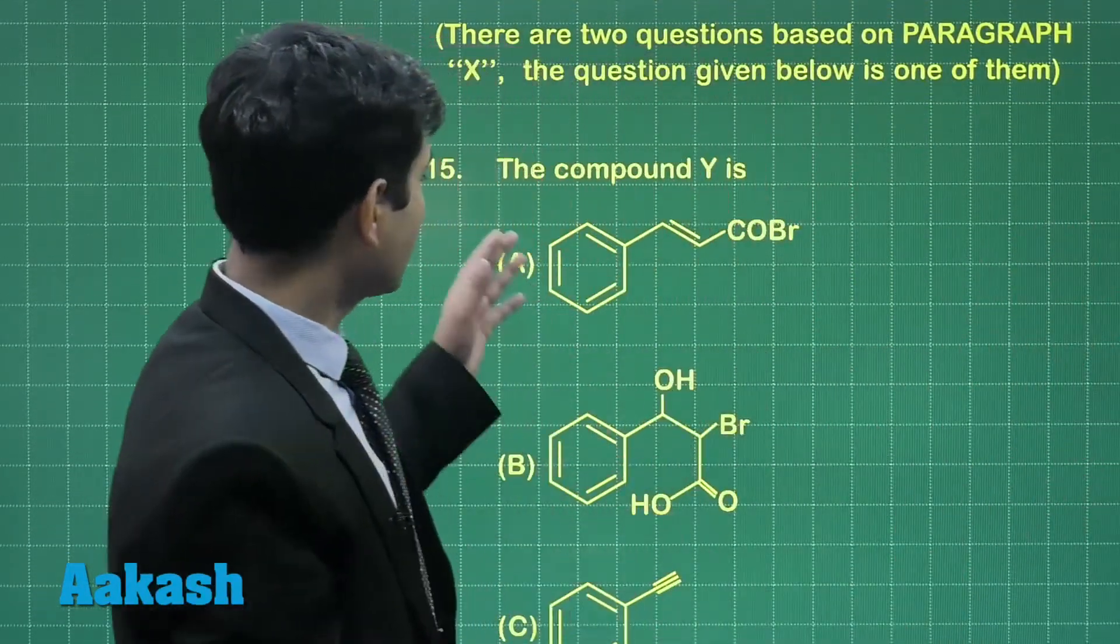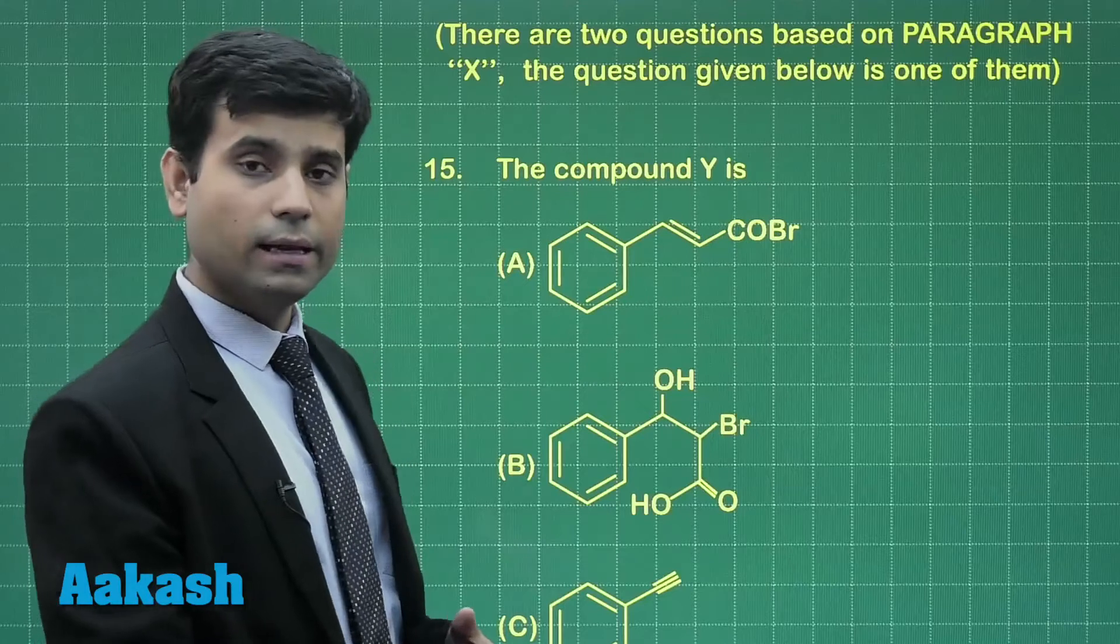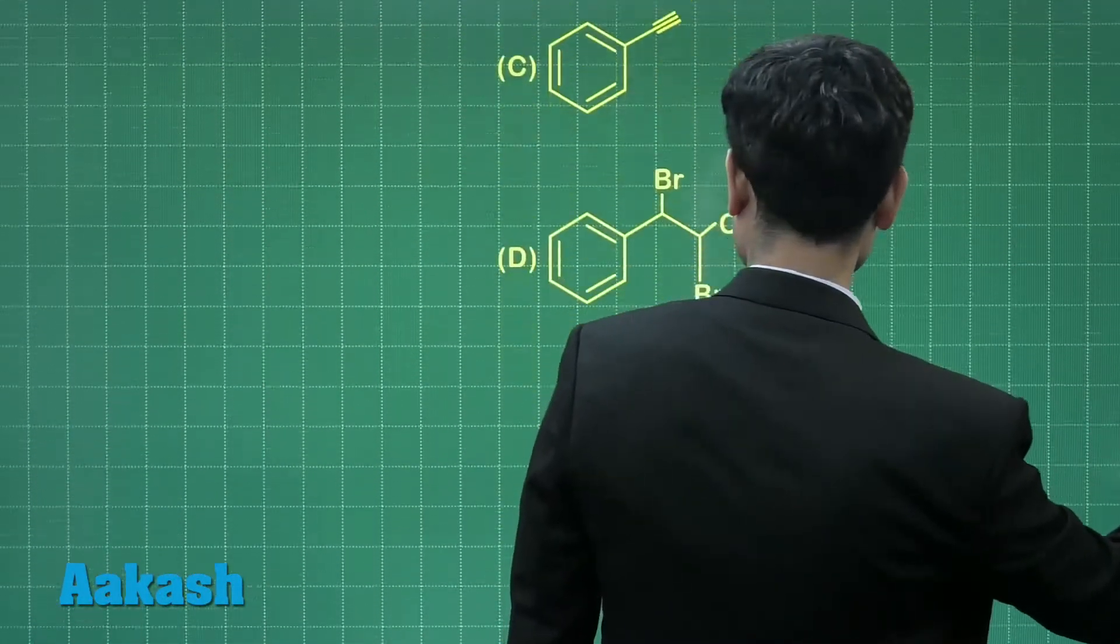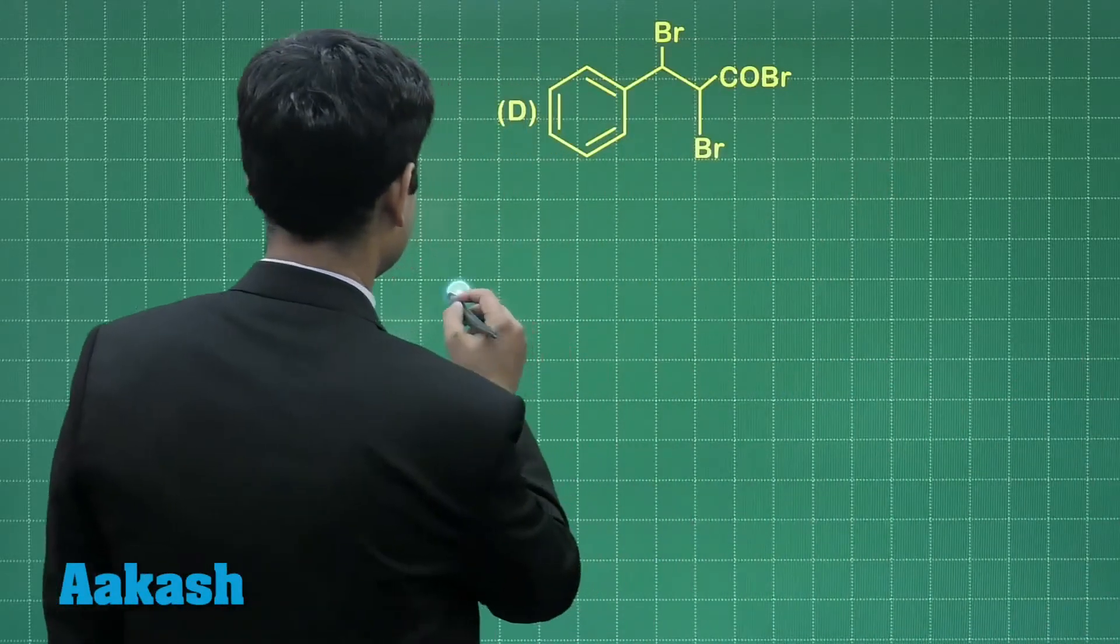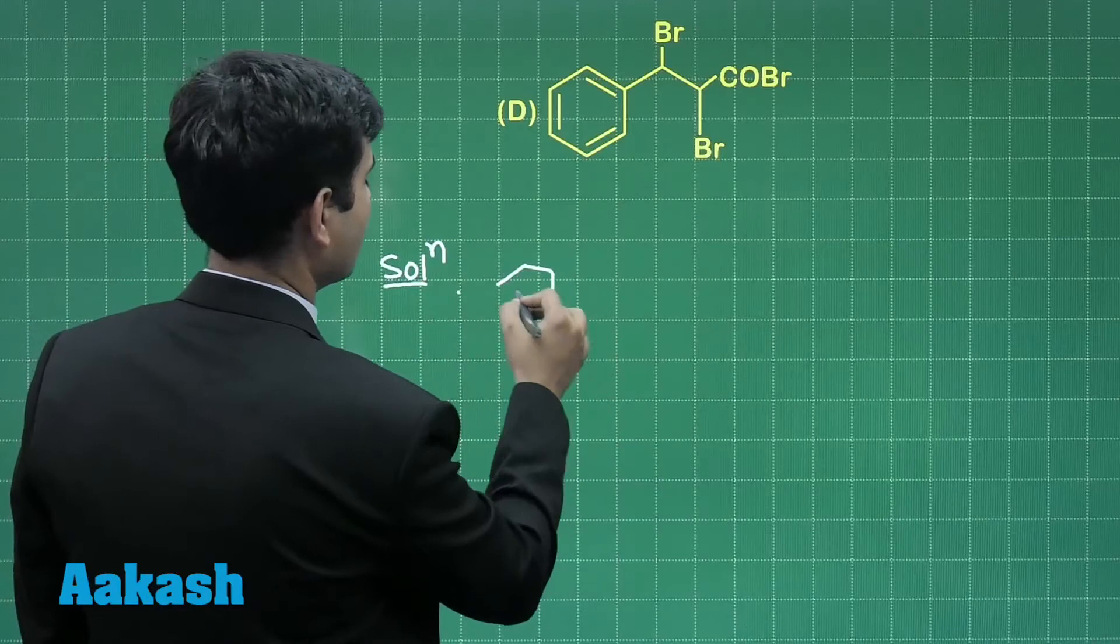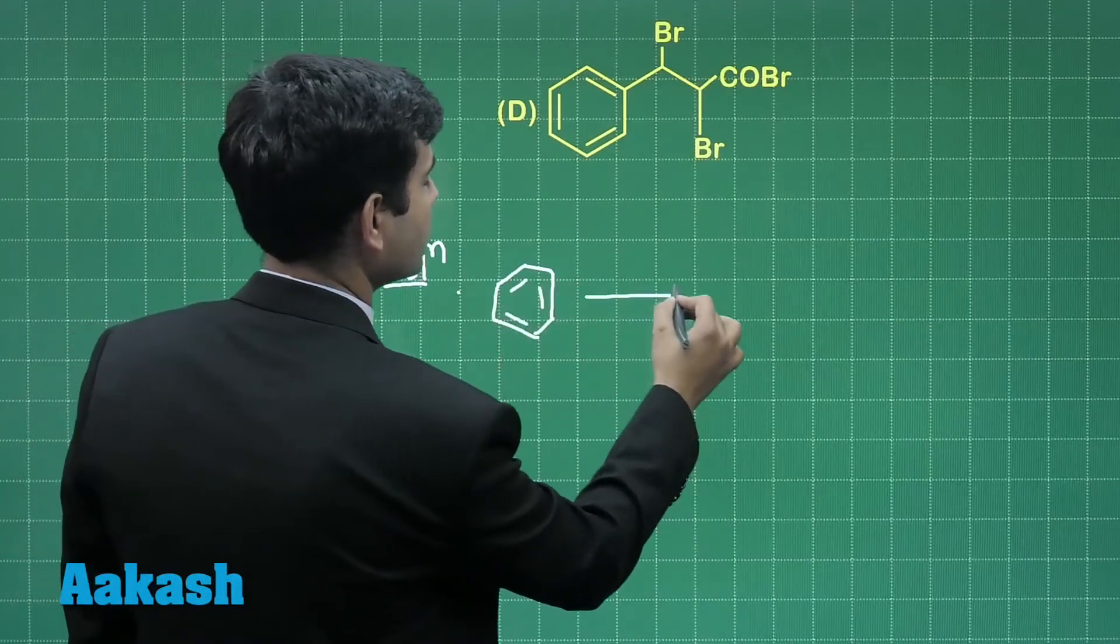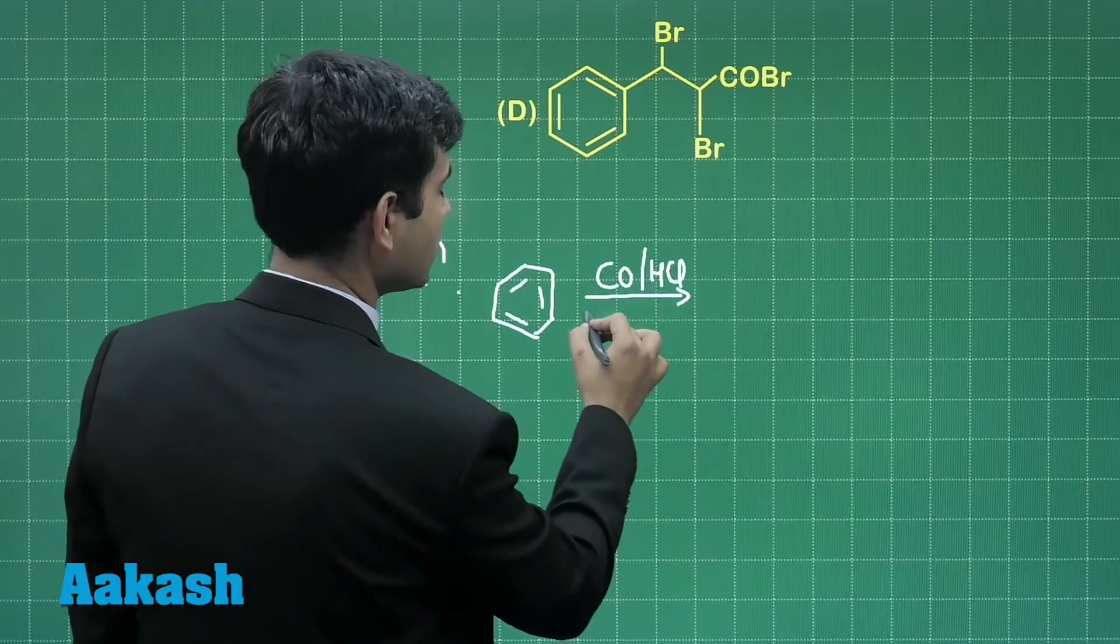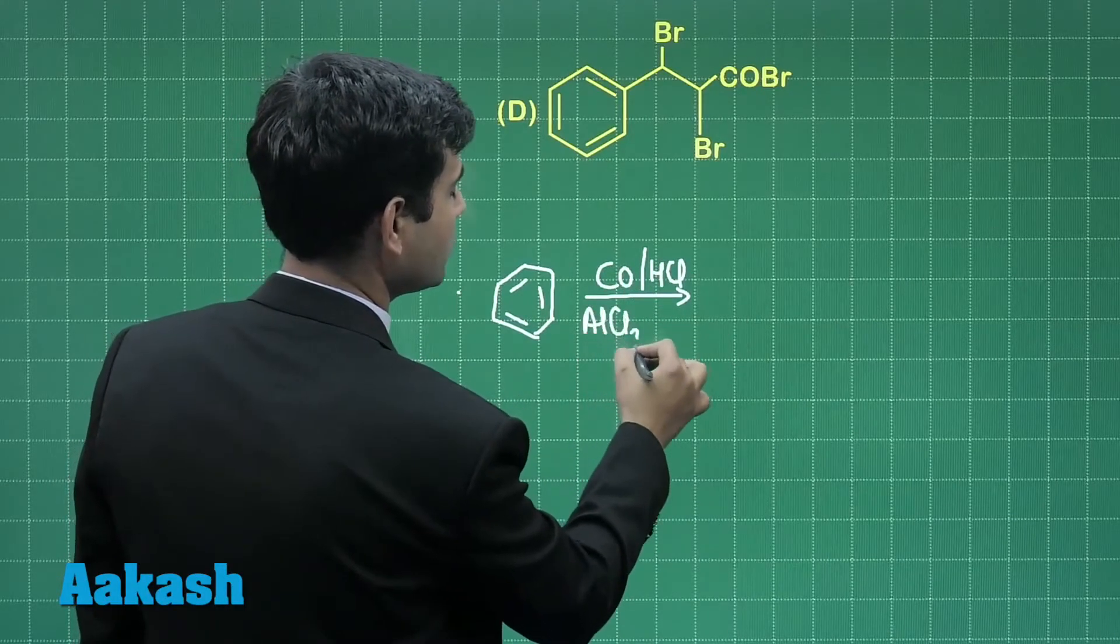The compound Y is—let us solve for Y first. We have benzene which reacts with CO/HCl in presence of anhydrous AlCl3 and CuCl.